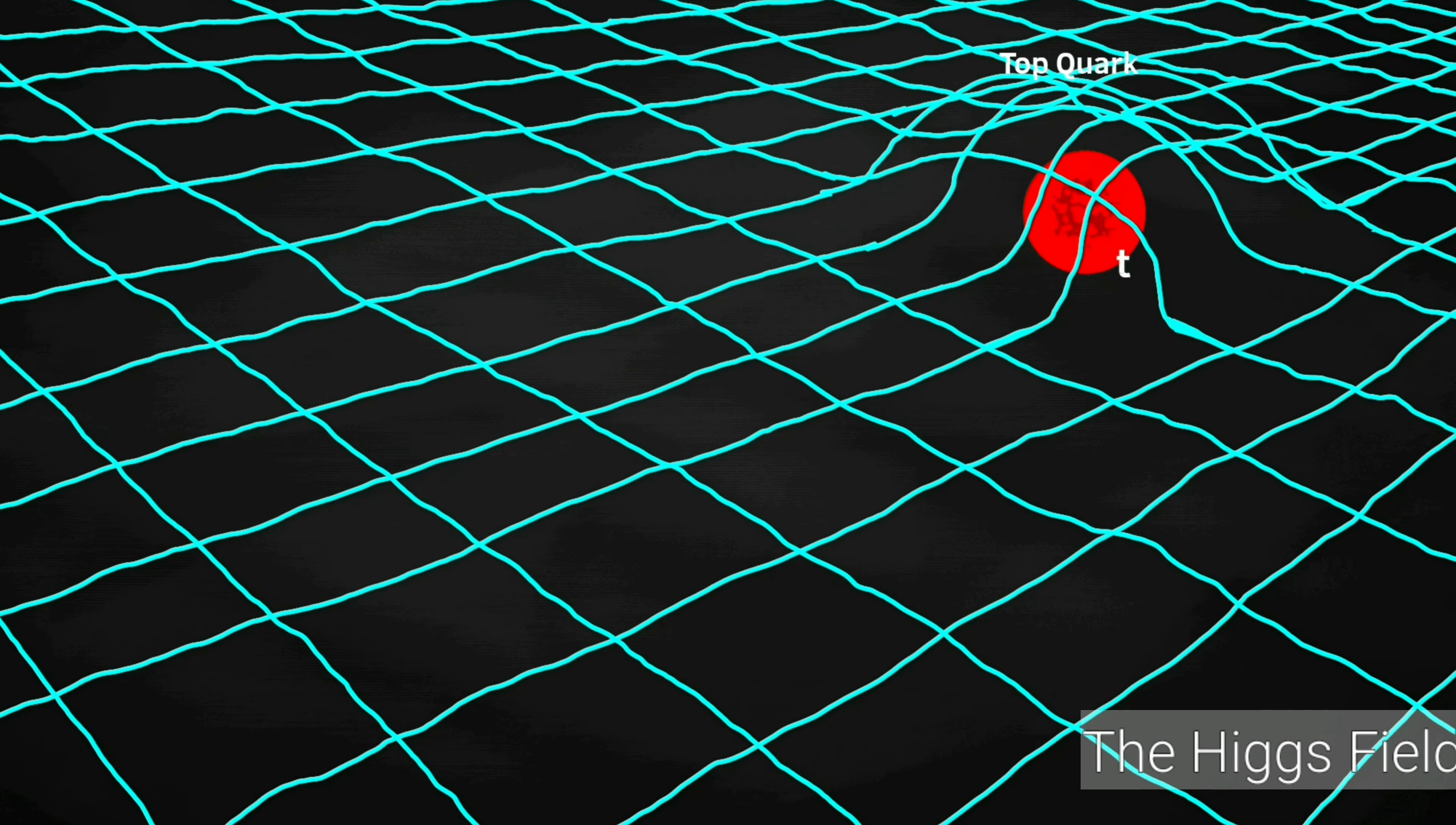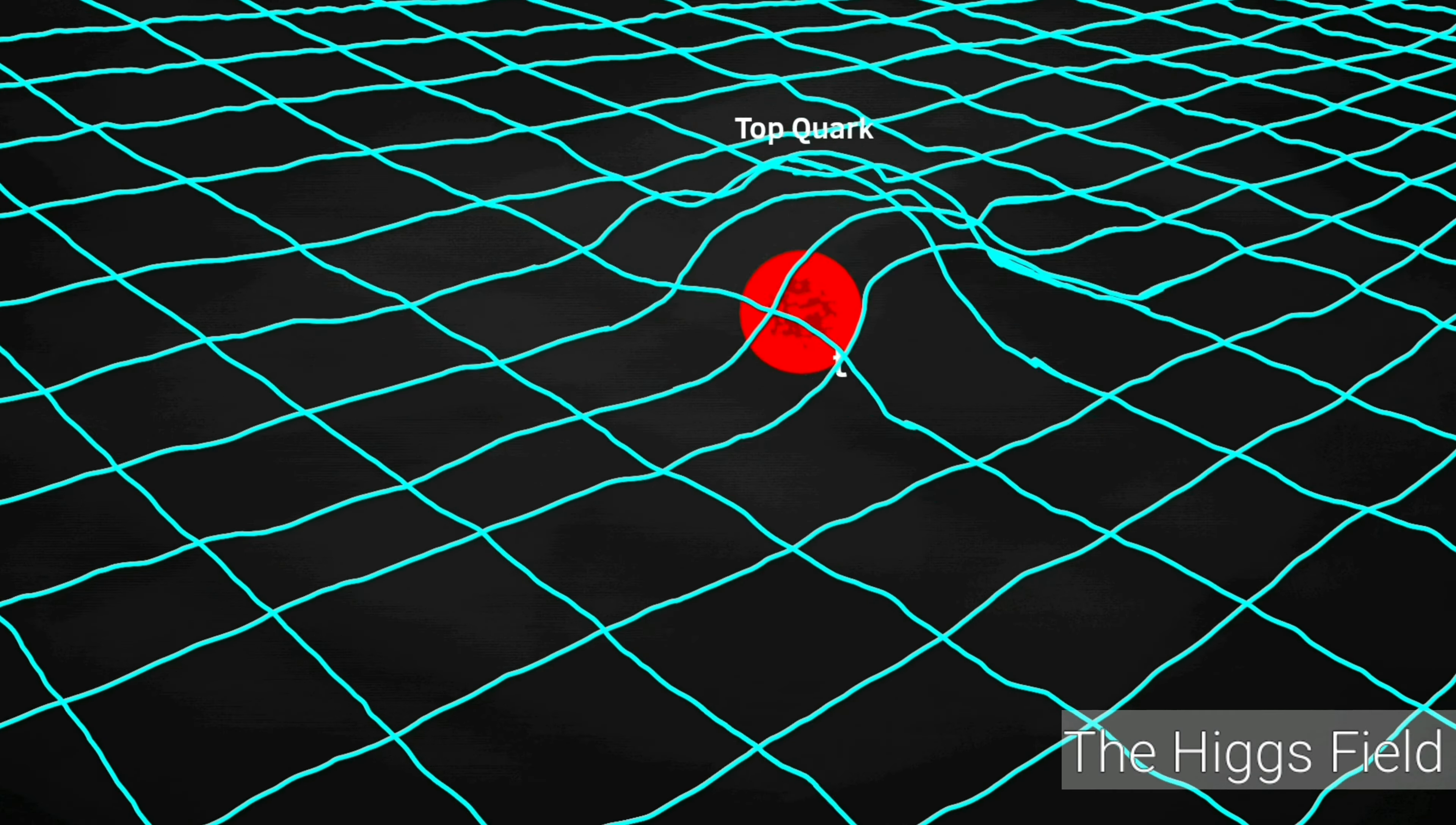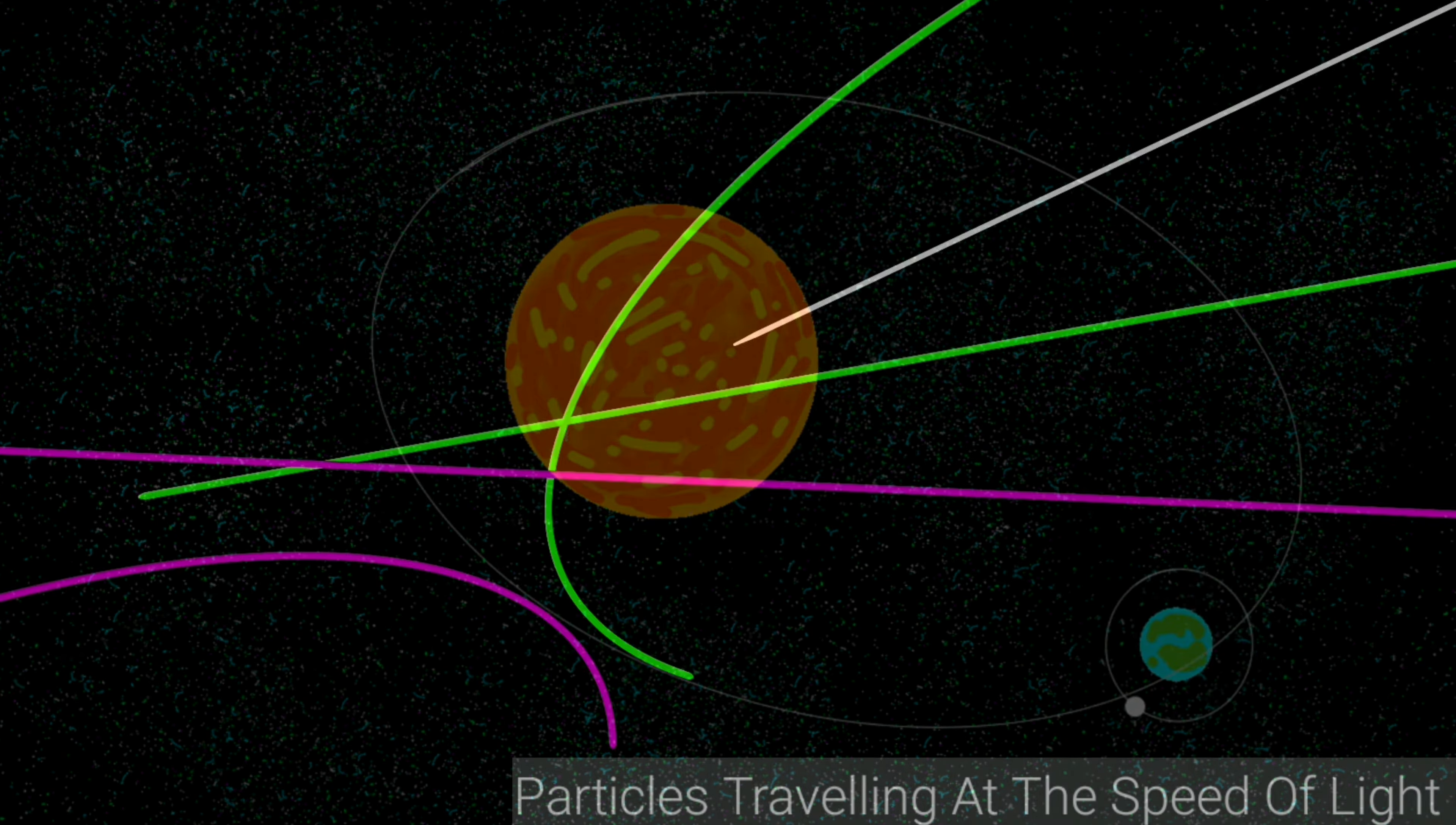Now it's not the Higgs boson, it's the Higgs field which gives mass to the elementary particles. Higgs boson only helps us in detecting the Higgs field. Without Higgs field, all particles would become massless and start moving at the speed of light.